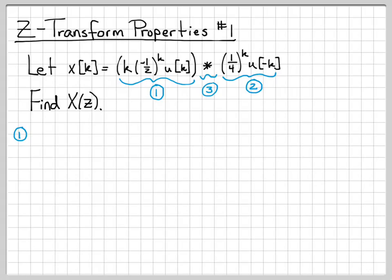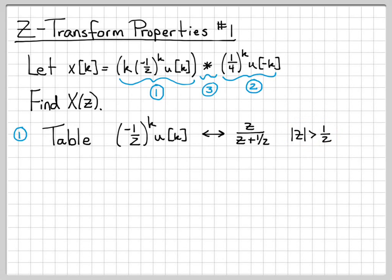So first, let's take a look at part one. From the table, if I had just the signal minus one-half to the k, u of k, this would be just a table lookup. I could go and look this up or even just know it from memory, because we've done this enough times now. This would have a Z-transform of Z over Z plus one-half with region of convergence magnitude of Z greater than one-half, because this is a right-sided signal.